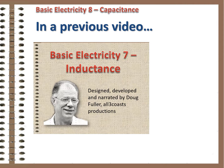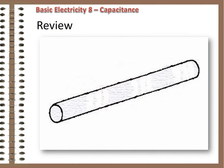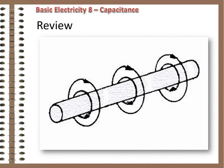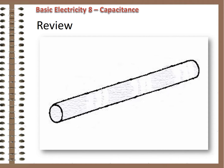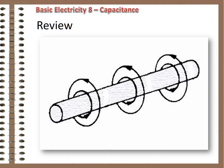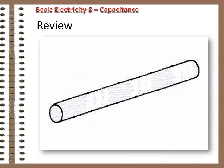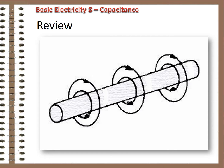In a previous video, I introduced the first half of a pair of interesting effects that occur because we have an alternating current electrical system. I explained how the moving magnetic field around an AC current-carrying conductor induces voltage in nearby conductors and itself, which is both a useful and troublesome property.